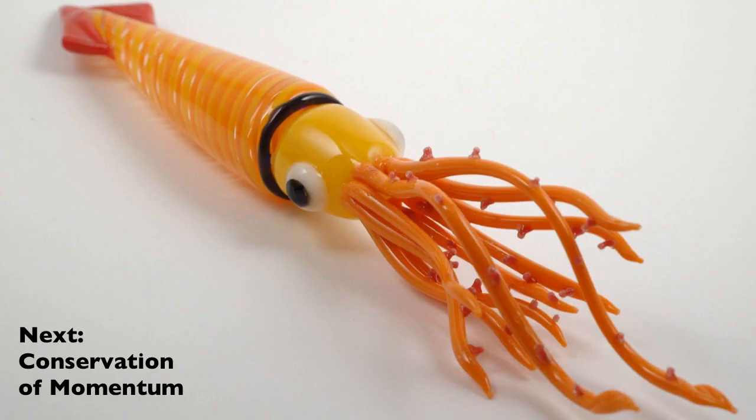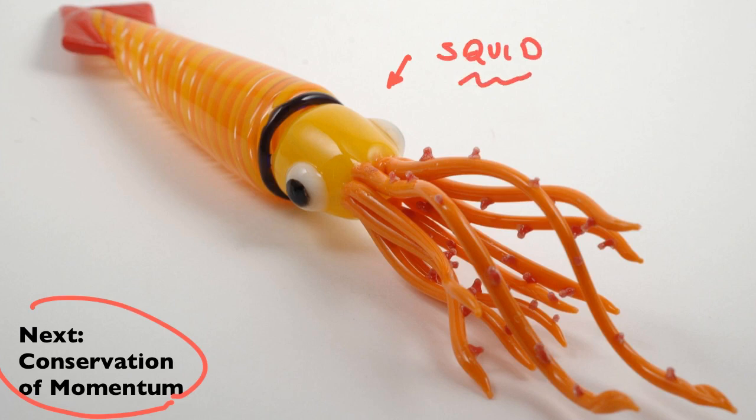The next piece of the puzzle is we're going to use the idea of conservation of momentum, the idea that momentum is conserved in certain interactions. The animal we're going to consider, which is the poster child for this sort of thing, is the squid. That's what we'll deal with in our next set of slides.